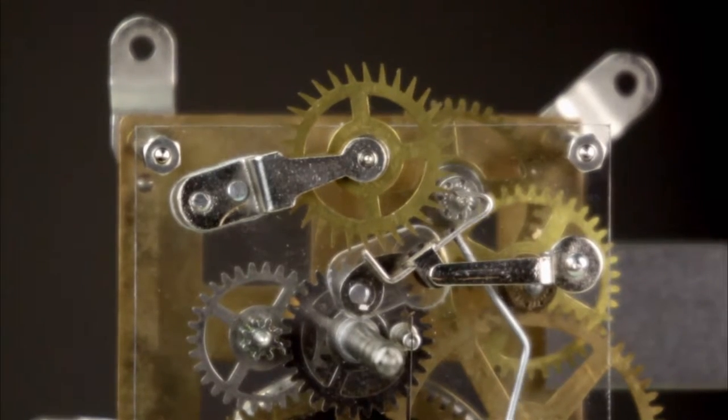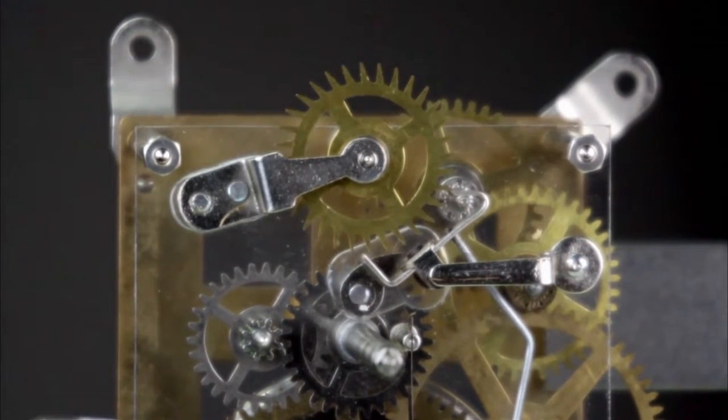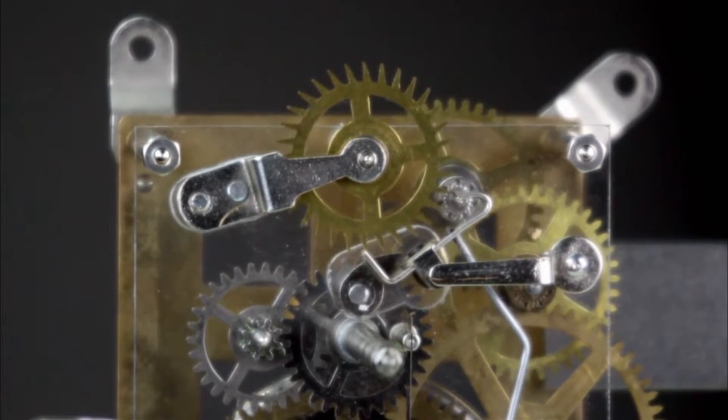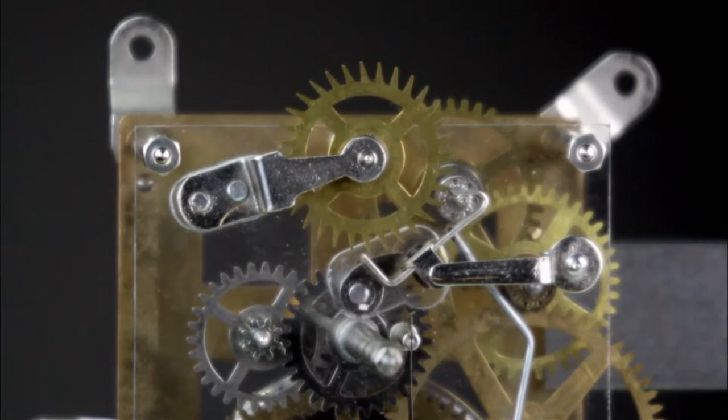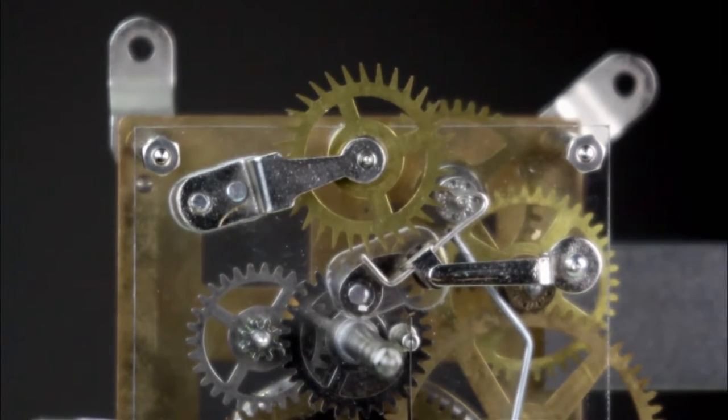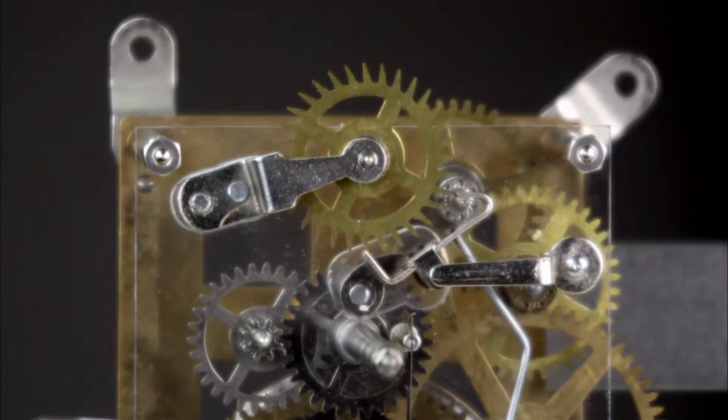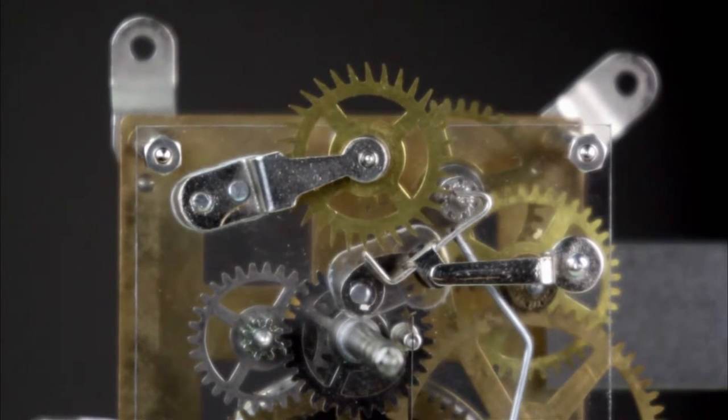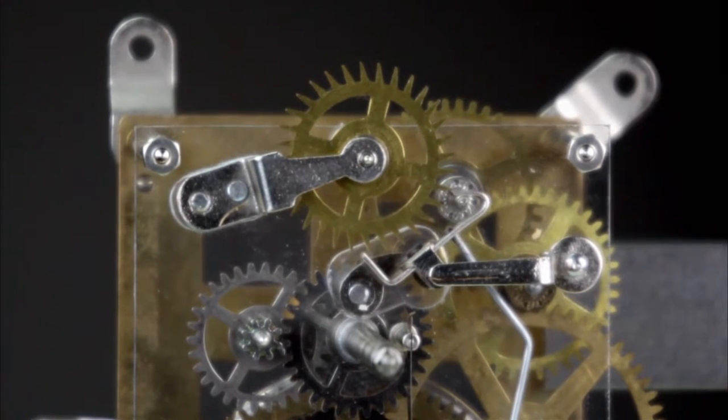There are three functions that every mechanical escapement must perform. It must alternately stop, then release the forward rotation of the escape wheel in synchronization with the movement of the pendulum. This stopping function is called the locking phase. It must provide a regular impulse to keep the pendulum swinging. It must have some clearance, called drop, where the pallets interface with the escape wheel, so that the teeth of the escape wheel can either skip by the pallet and run uncontrolled, or bind against the pallets and stop the escape wheel from rotating.